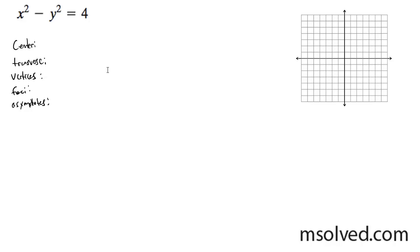We want to find the following for the hyperbola. First thing we've got to do is divide through by 4, and we're going to end up with x squared over 4 minus y squared over 4 equals 1.